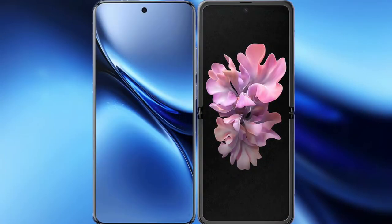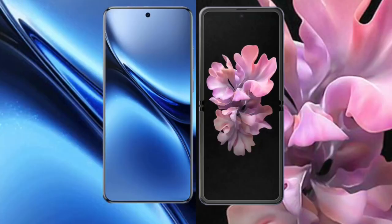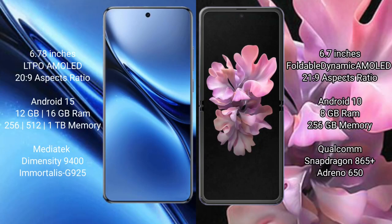I will compare the new Vivo X 200 Pro with the Samsung Galaxy Z Flip. The Vivo X 200 Pro features a 6.78-inch LTPO AMOLED display with a 20:9 aspect ratio, while the Samsung Galaxy Z Flip has a 6.7-inch foldable Dynamic AMOLED display with a 21:9 aspect ratio.